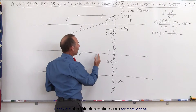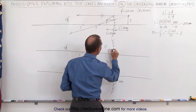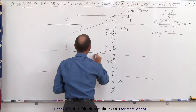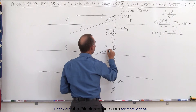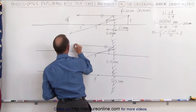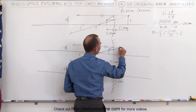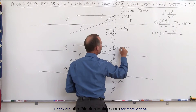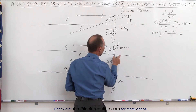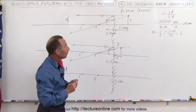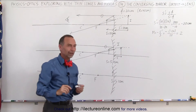Now what happens when we put the object closer to the mirror? Again we draw the rays. The first ray is parallel to the optical axis — it reflects off the mirror and goes to the focal point. The second ray is drawn from the focal point to the tip of the object, continues to the mirror, and then reflects parallel to the optical axis. The observer sees the two rays, projects the path backwards, and where the two projected rays converge, that's where the image is placed. Notice the image has gotten closer to the mirror and appears smaller as well.